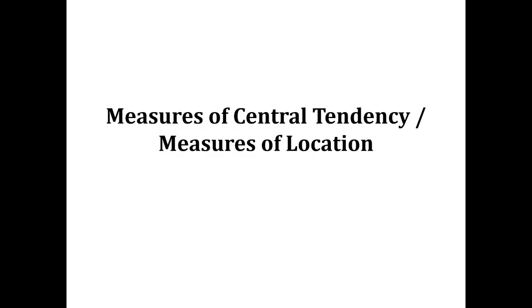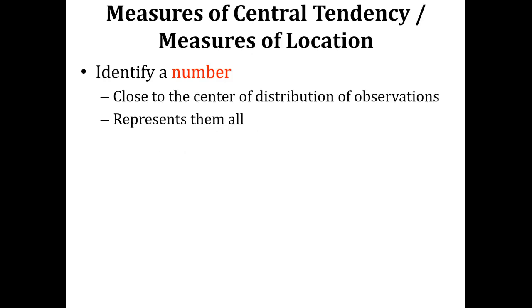Today we are going to discuss the measures of central tendency, or measures of location, which is one of the fundamental concepts in descriptive statistics. The purpose of measures of central tendency is to identify a number which is close to the center of the distribution of observations and which represents them all. In these calculations, we have to find a number which can represent all of the observations we have collected, and this number should be close to the center of the distribution.